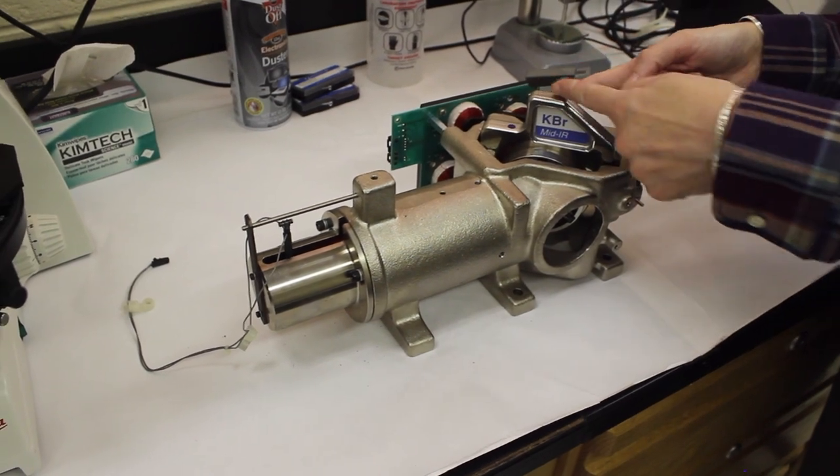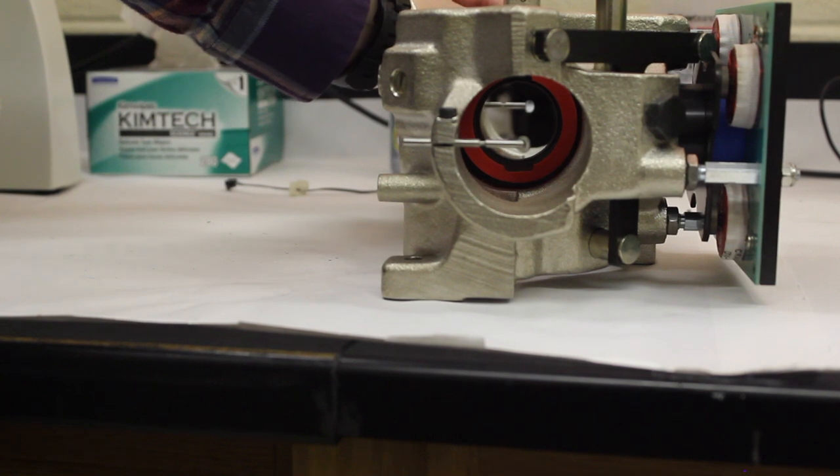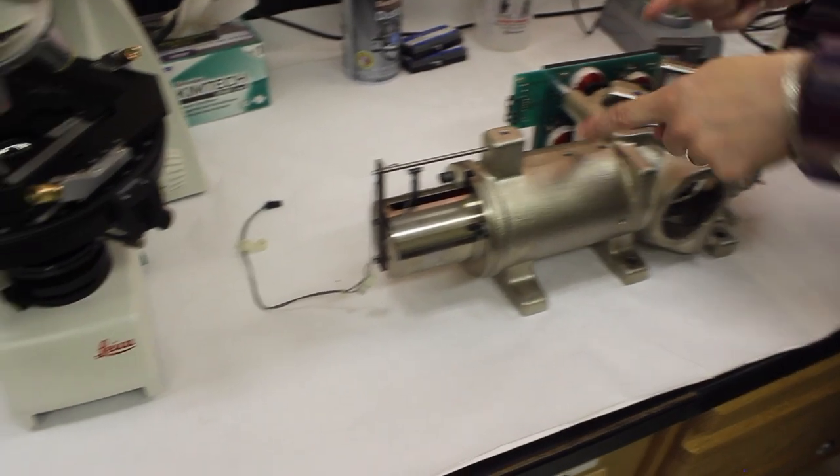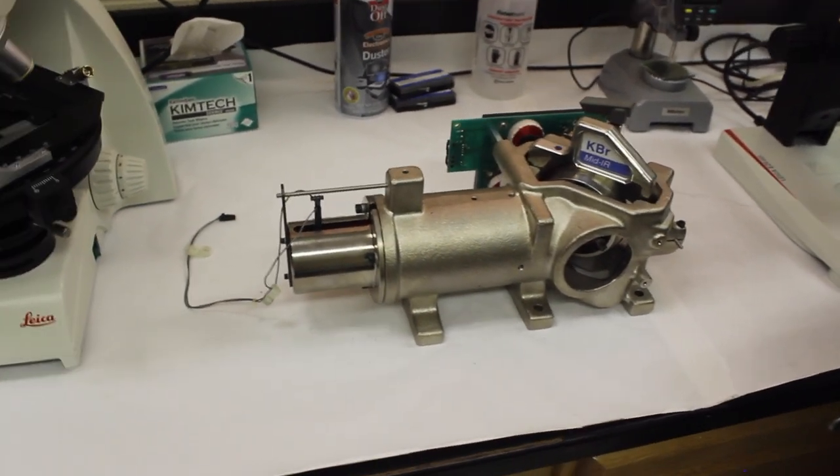Half of it will go through the beam splitter and hit the stationary mirror, and half of it will get reflected and hit the moving mirror. And then those will bounce back and recombine, and we'll use that to make our measurements.